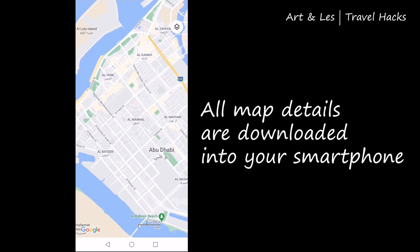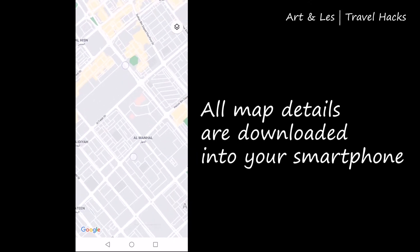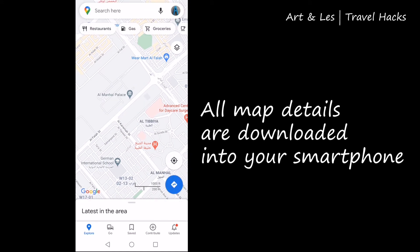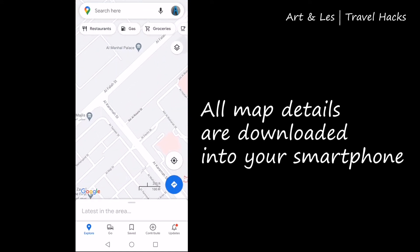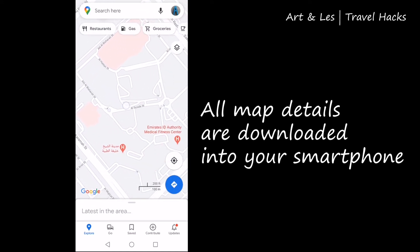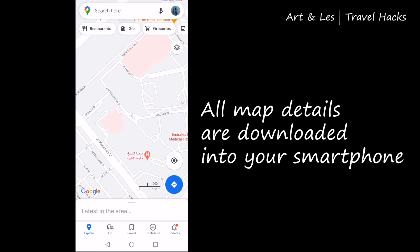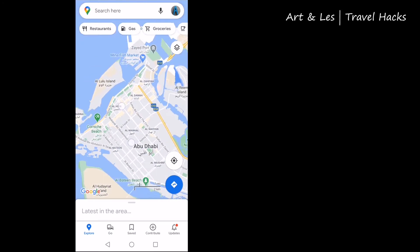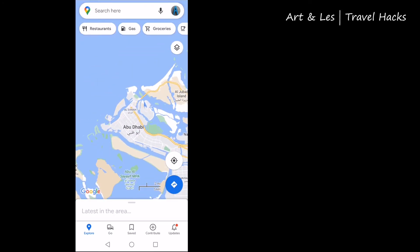As you can see, even though you turned off your Wi-Fi, all the map details are intact and downloaded in your smartphone. If you browse the surrounding areas, you can see that there are not many details because we haven't downloaded those yet.